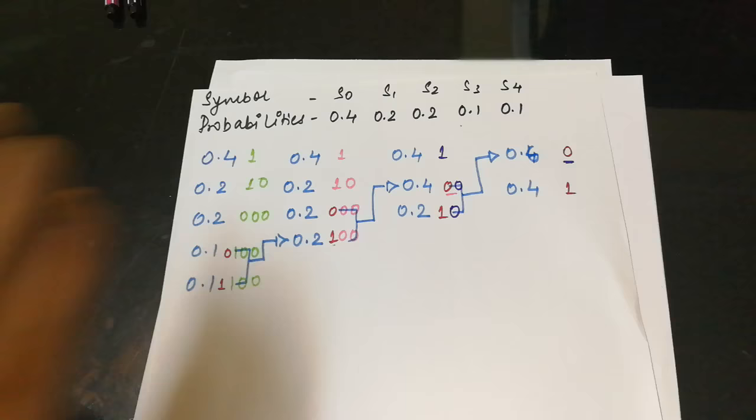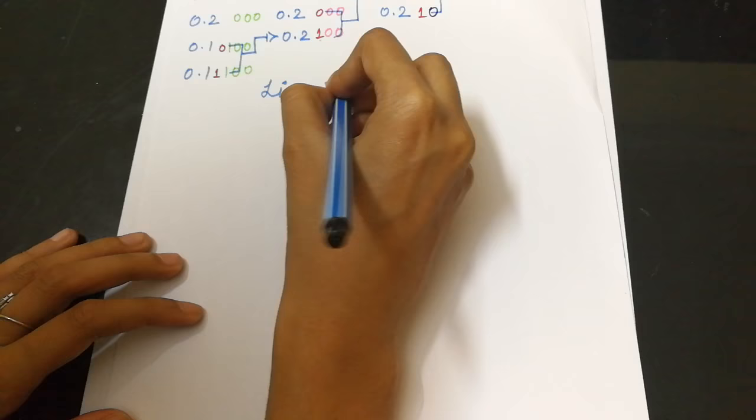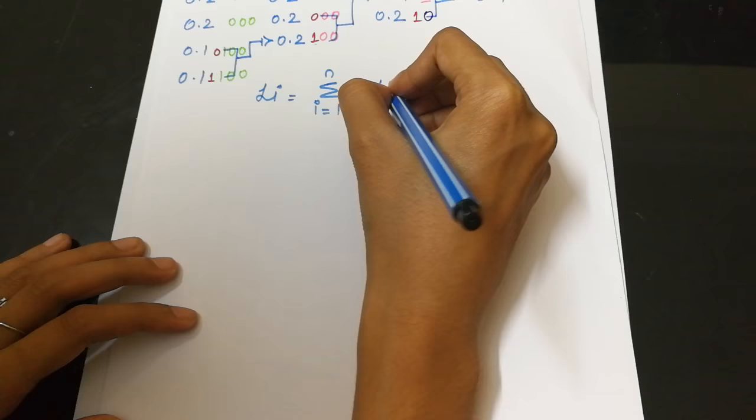Now this is the first step that we have two. Now we start by calculating the length. The length is given as the summation of i equals 1 to n, probabilities into the length. This L is the code length of the probabilities.